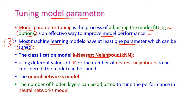Let us see one example: the K nearest neighbor algorithm, which is a popular classification model. Here the parameter K is used to identify the number of nearest neighbors. If K equals one, only one neighbor is considered; if K equals two, two neighbors; three means three neighbors; five means five neighbors. By adjusting K, we can easily classify the data.